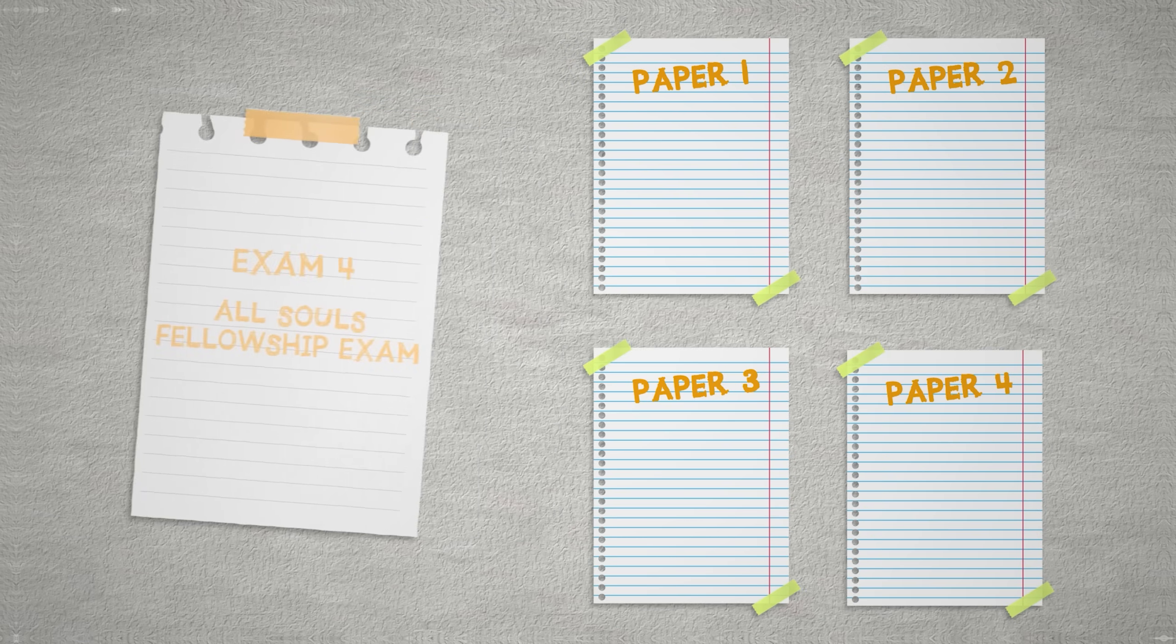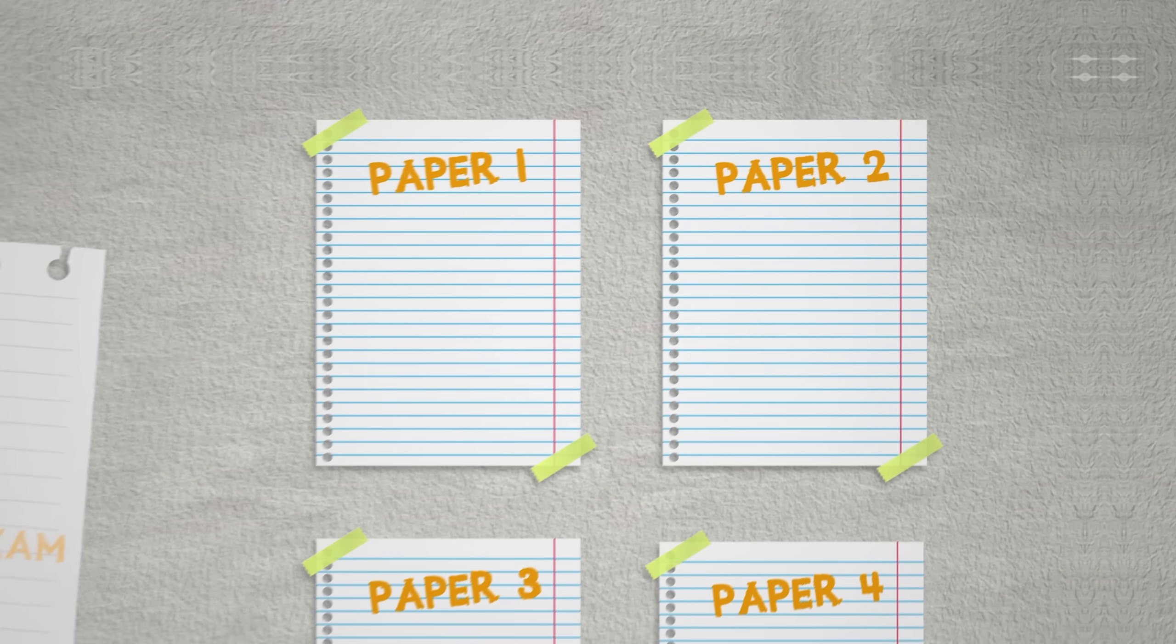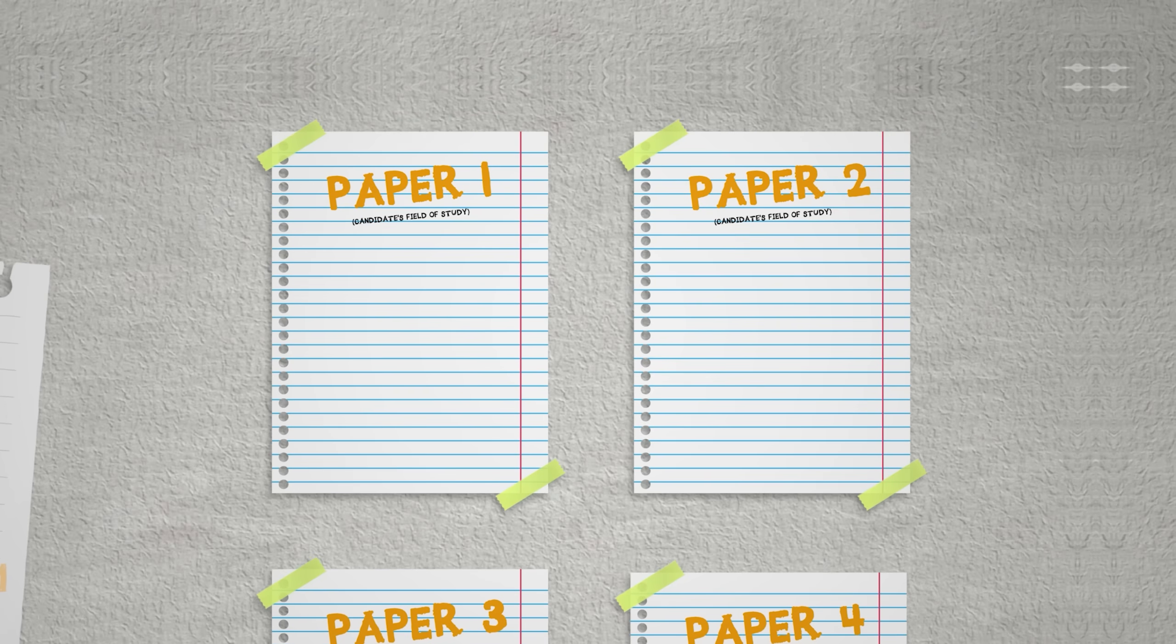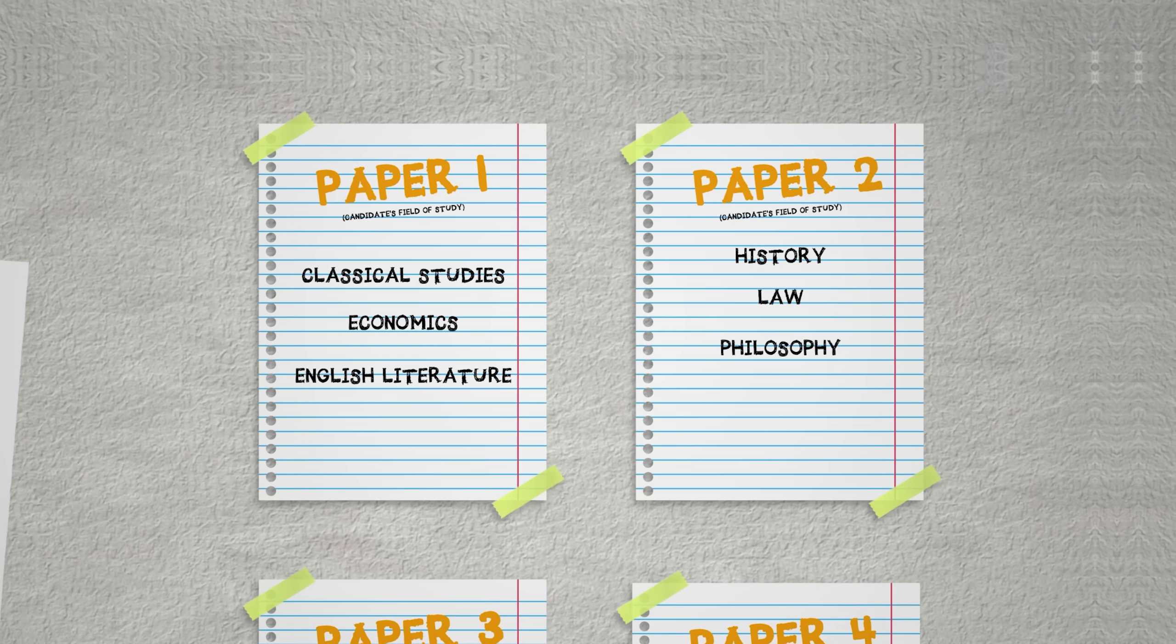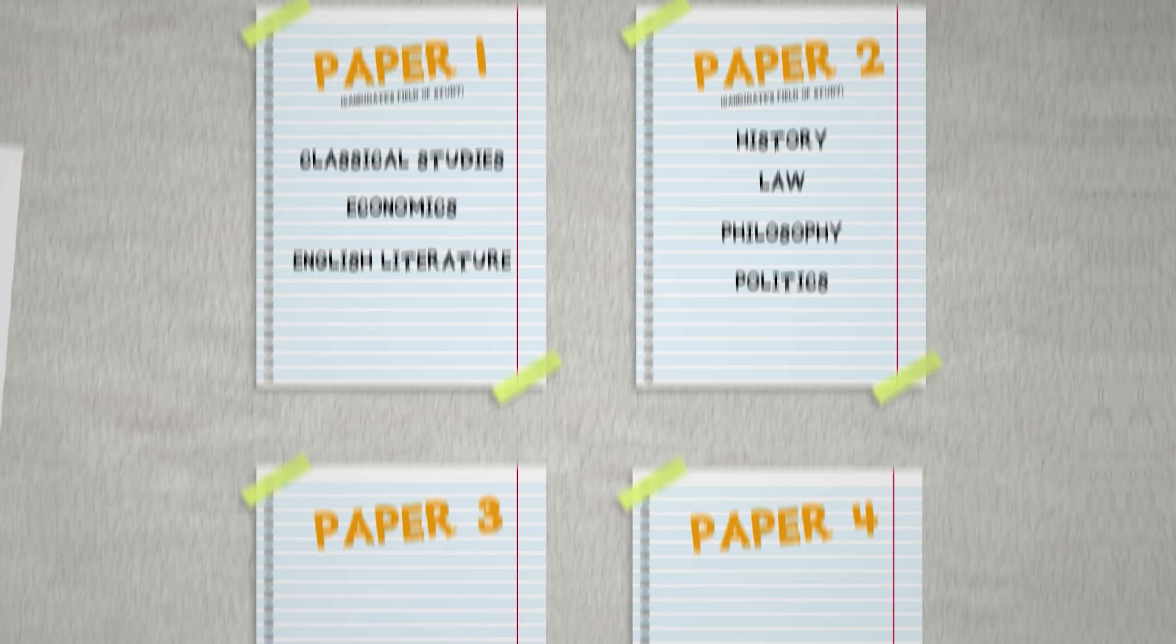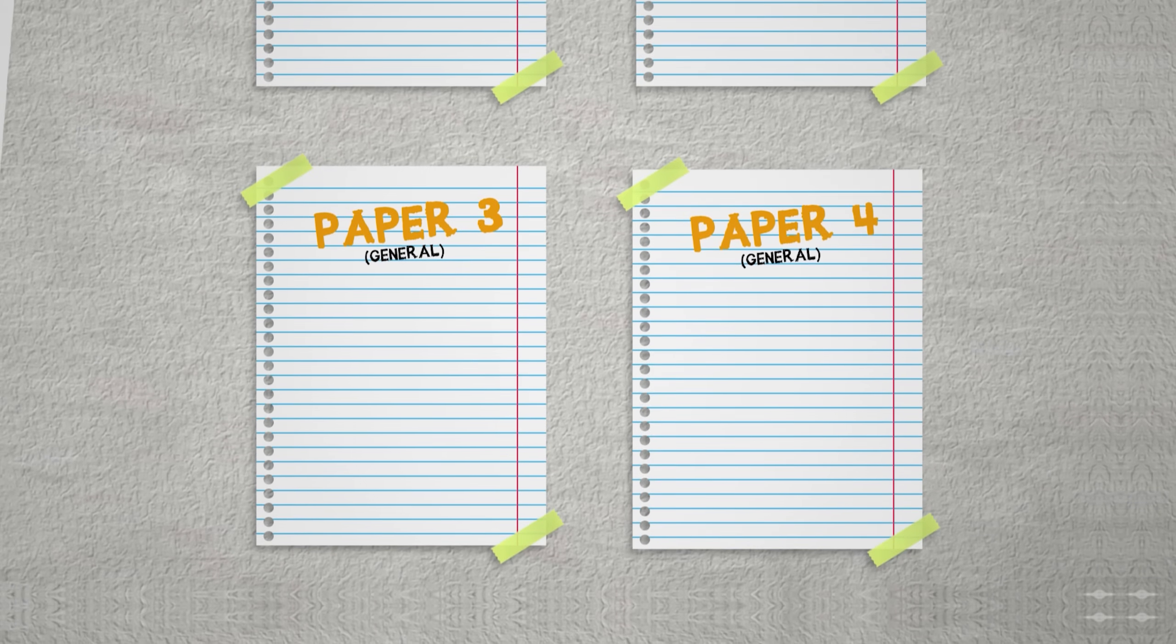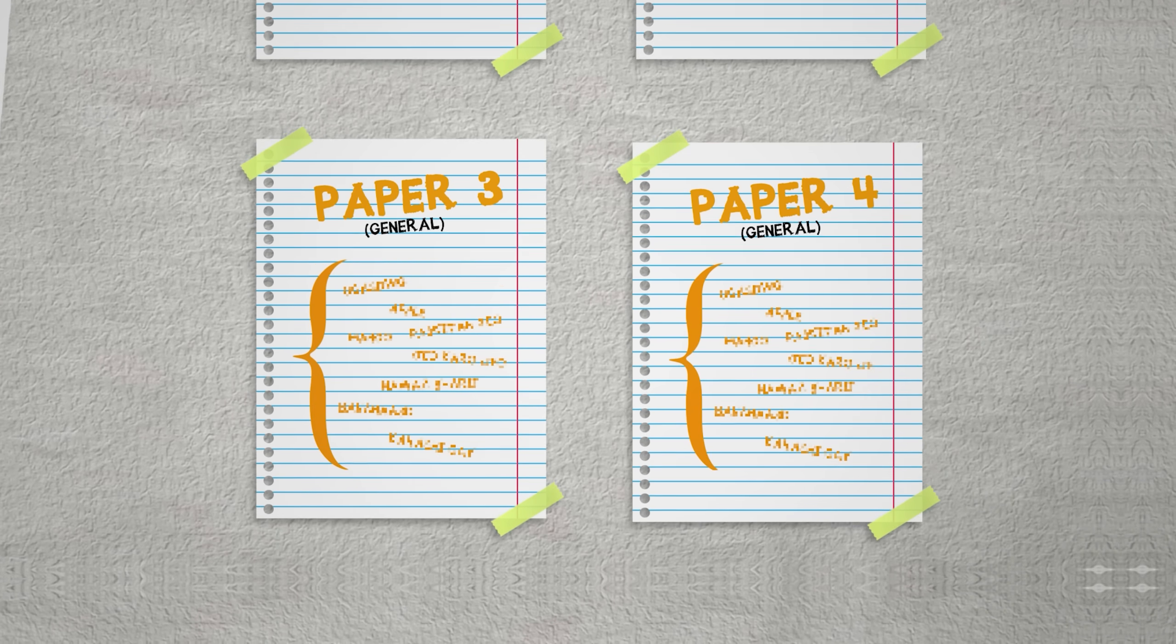So what does this exam look like? Well, it's 12 hours long. It consists of four papers of three hours each. Two of the papers are related to the candidate's field of study. For example, classical studies, economics, English literature, history, law, philosophy, or politics. And the other two papers are general papers, which contain questions on a wide array of topics.